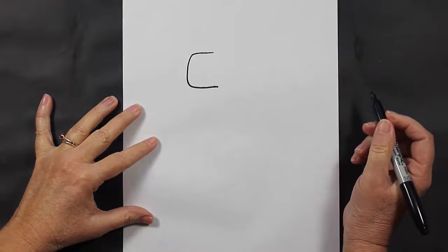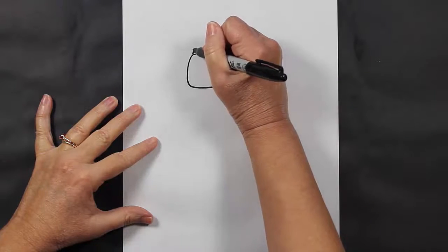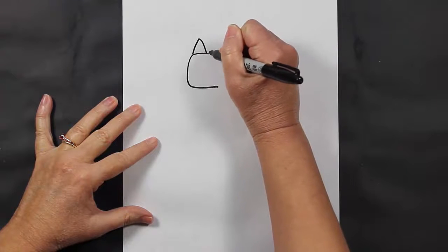What we're going to do next is make some ears. Those are just upside-down V's.